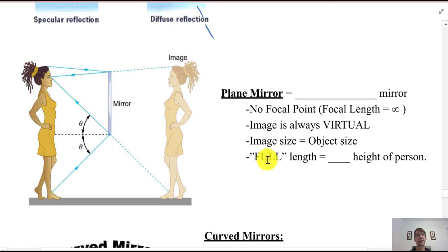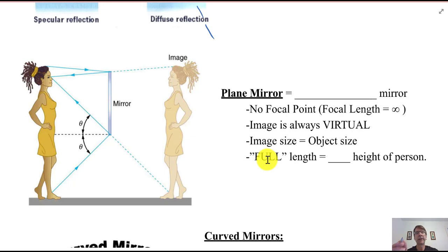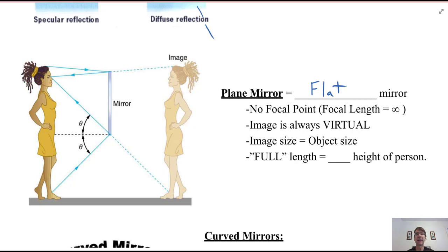Let's talk about a flat mirror. Here's a person looking in a mirror. It turns out that a full-length mirror only needs to be half the height of the person that uses it. So if you're a six-foot person, a full-length mirror for you is only three feet tall. A flat mirror has no focal point, or the focal length is infinity. The image produced is always virtual.